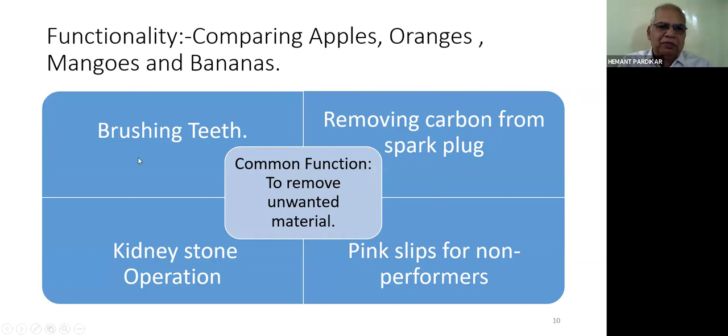Functionality: comparing apples, oranges, mangoes and bananas. These four activities - brushing teeth, removing carbon from spark plug, kidney stone operation, and pig slip from non-performance - all have a common general function which is to remove unwanted material. We can add another 10 to 15 specific functions to this general function. Looking at function breaks the silos of thought.